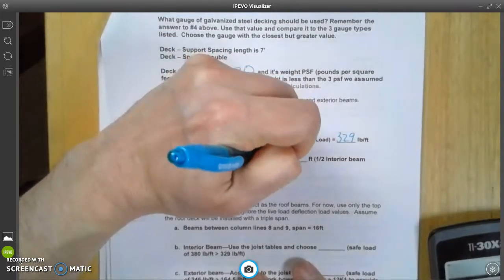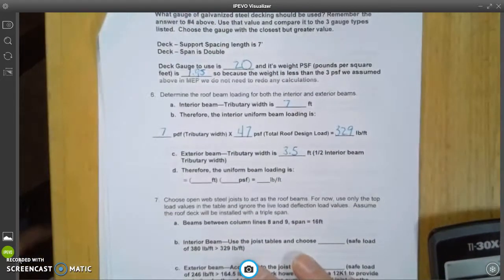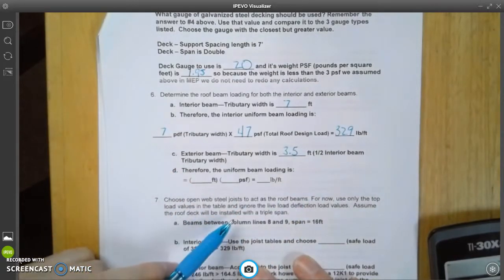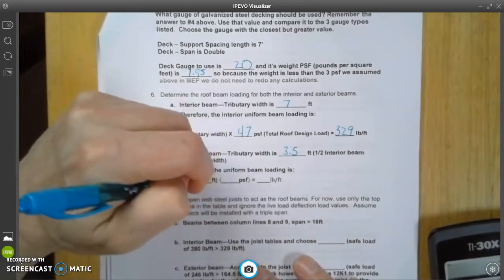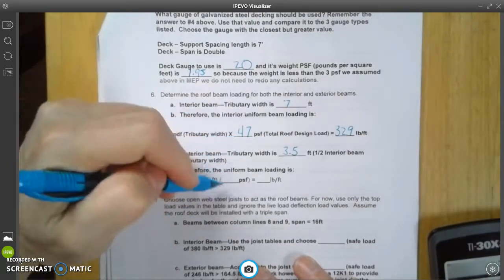So I'm just going to write right there, 3.5 feet, and that's one half the interior beam tributary width. You're going to take 3.5 times our 47,